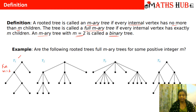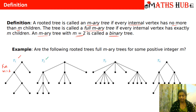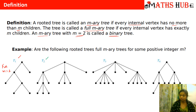Now let's talk about T2. In tree T2 you can see that the root vertex has exactly 3 children. The first internal vertex has 3 children, the second internal vertex has 3 children, and then this vertex also has exactly 3 children. The rest of the vertices have 0 children. So again either the internal vertices have 3 children or no children. This is a full 3-ary tree where M is equal to 3.